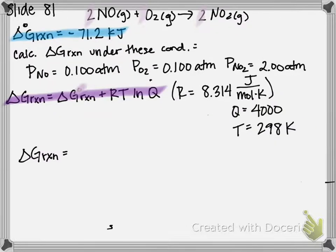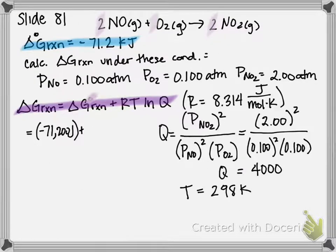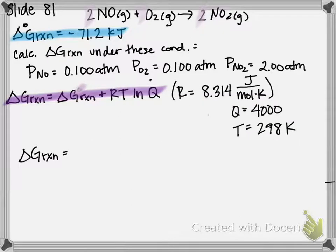Okay, sorry about that. I moved to another slide, so here's where we were. I just erased a little to spread out the calculation. All right, so our delta G naught of reaction is negative 71,200 joules—we just changed kilojoules to joules so our units can cancel.